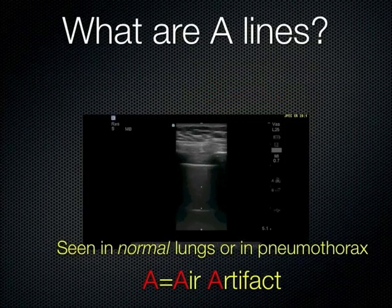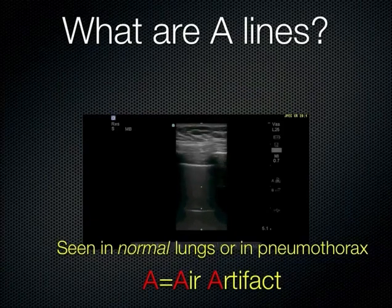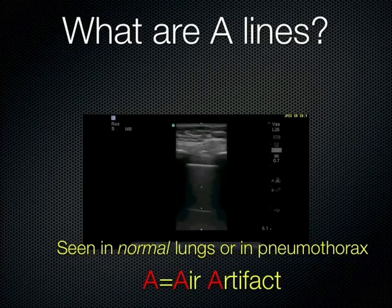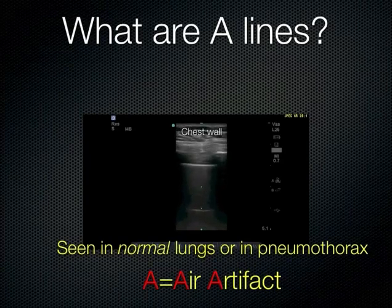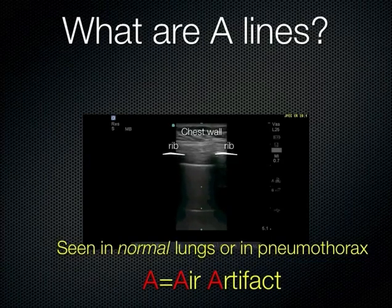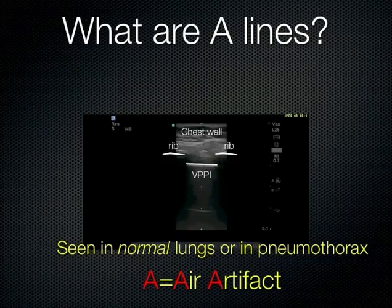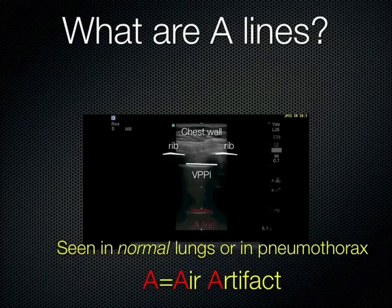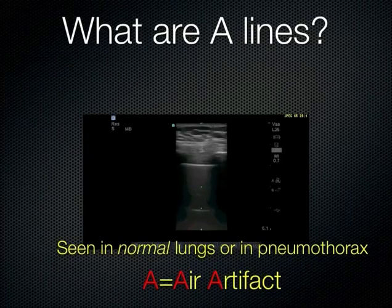Looking at a chest wall image with a high-frequency probe: you have the chest wall, the ribs with bright white cortex, and the pleural line just below — usually about half a centimeter below the ribs depending on body habitus. Below that is the A-line, which is a reflection of the pleural line appearing deeper. That's artifact — it's not really there. Ultrasound waves get trapped at the pleural line due to the acoustic impedance difference with the air underneath, setting up a resonance.